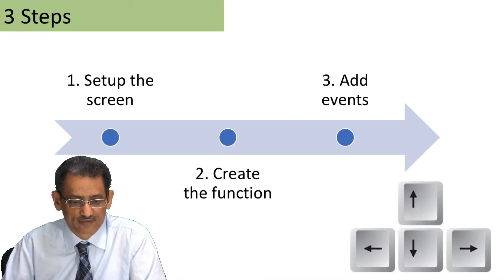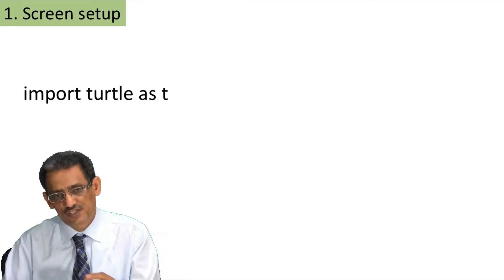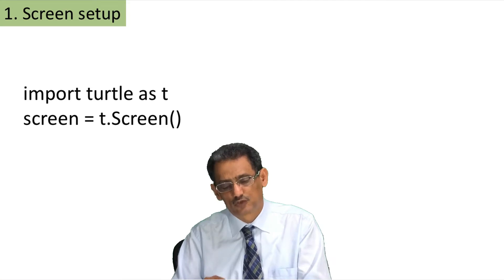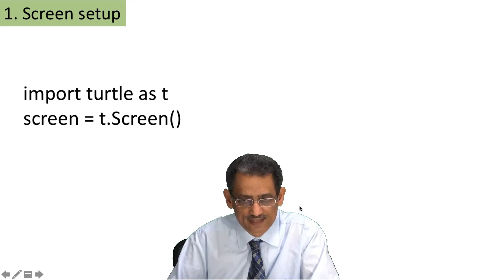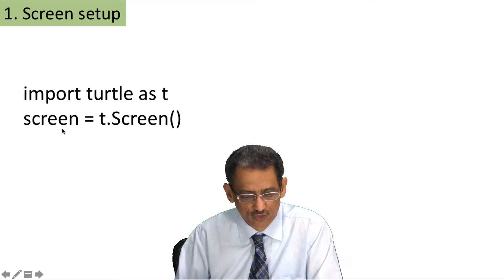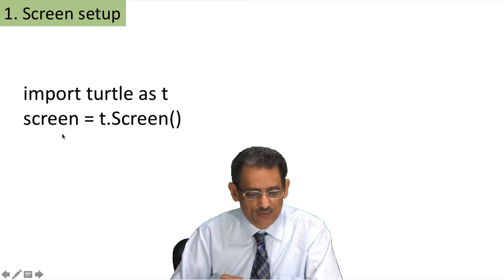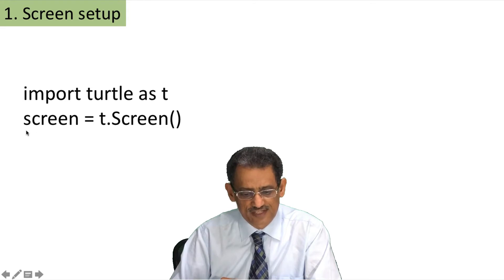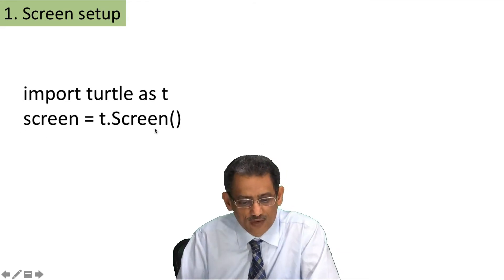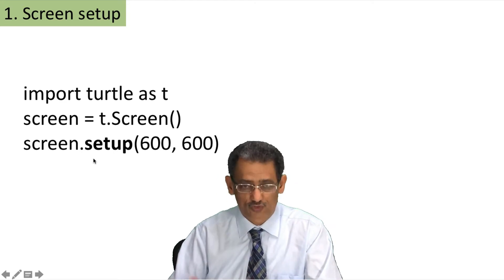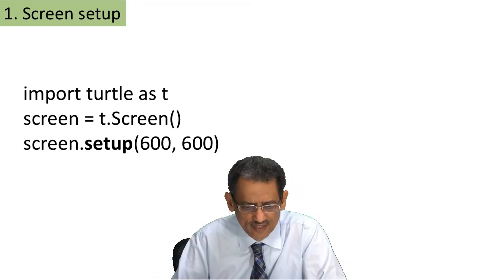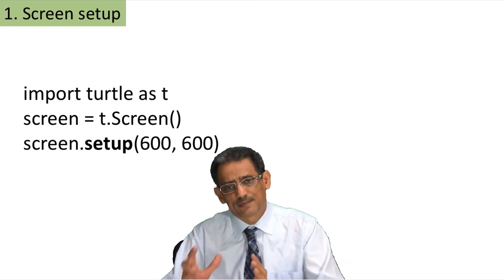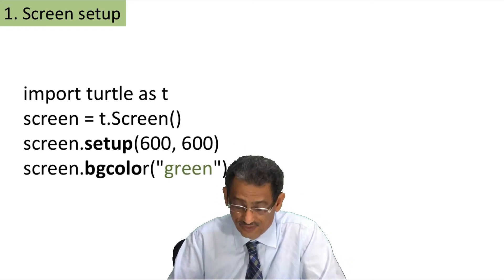For the first step, setting up the screen, we will import turtle. Then we'll use the function: screen equals t dot Screen — notice Screen with an uppercase S is the function, while screen with lowercase is the variable name we decided to use. Now we'll give it a size using setup, with dimensions 600 by 600. You can select the size that you think is better for your game, and we'll give it a background color of green.